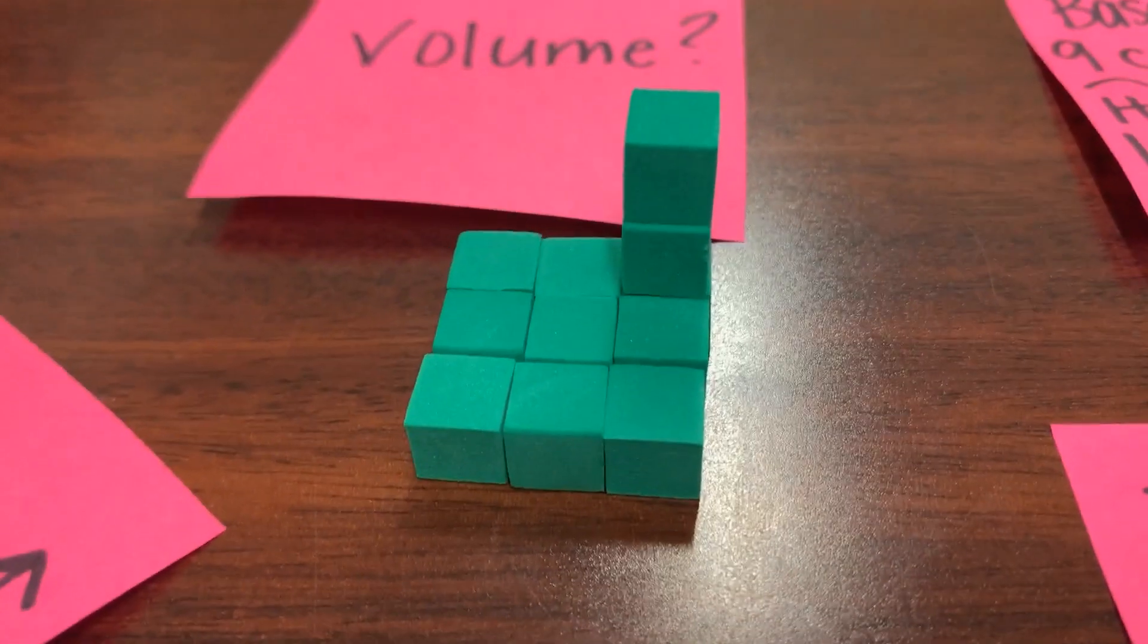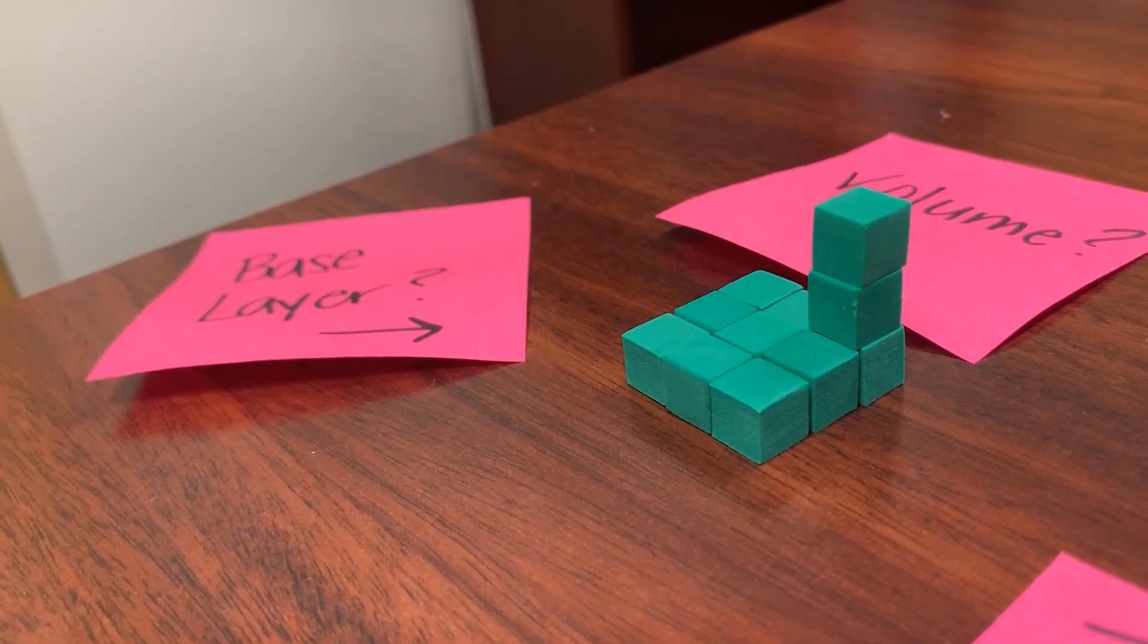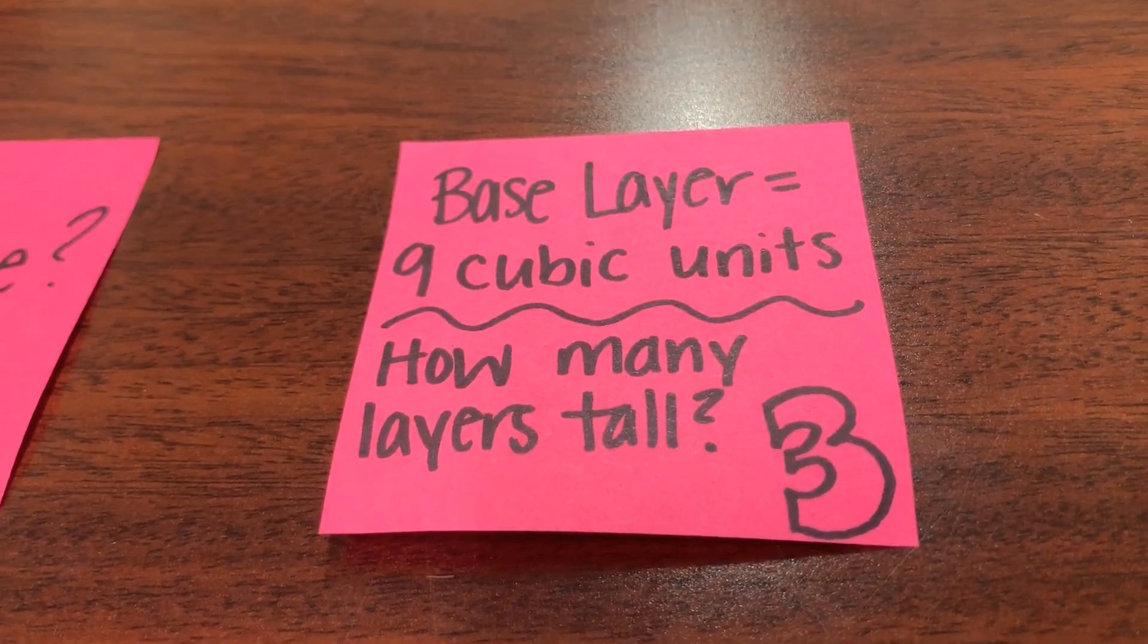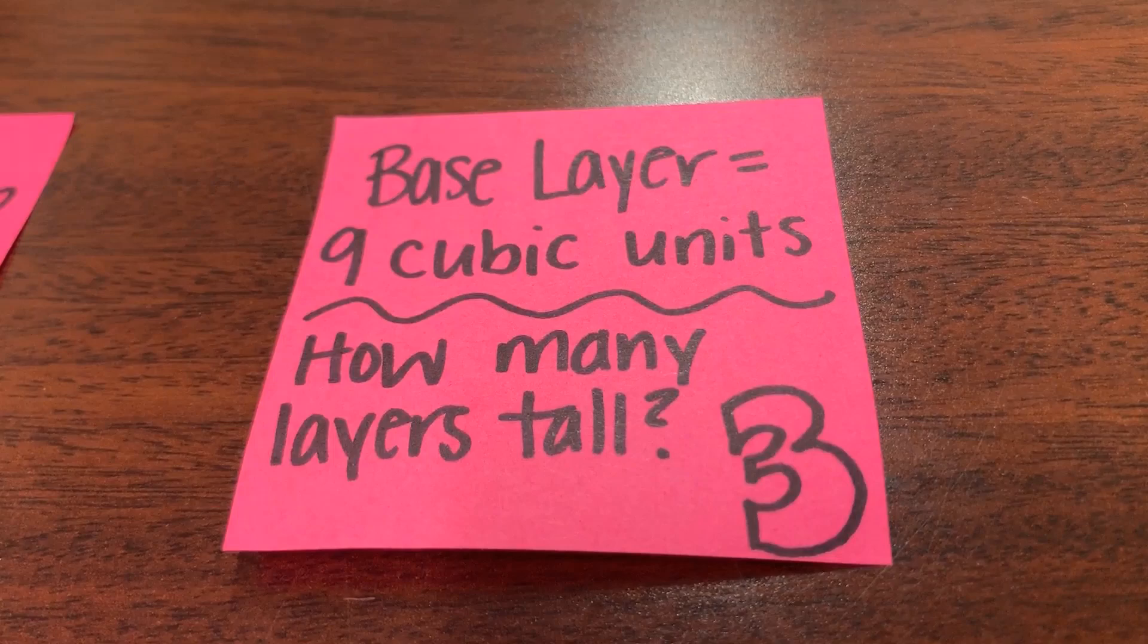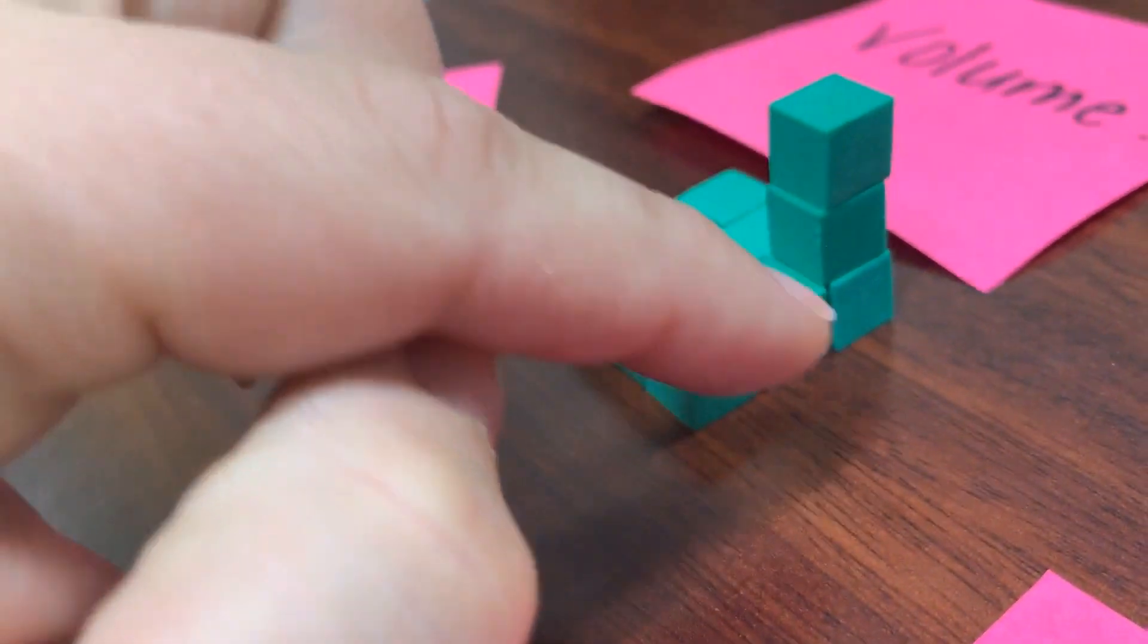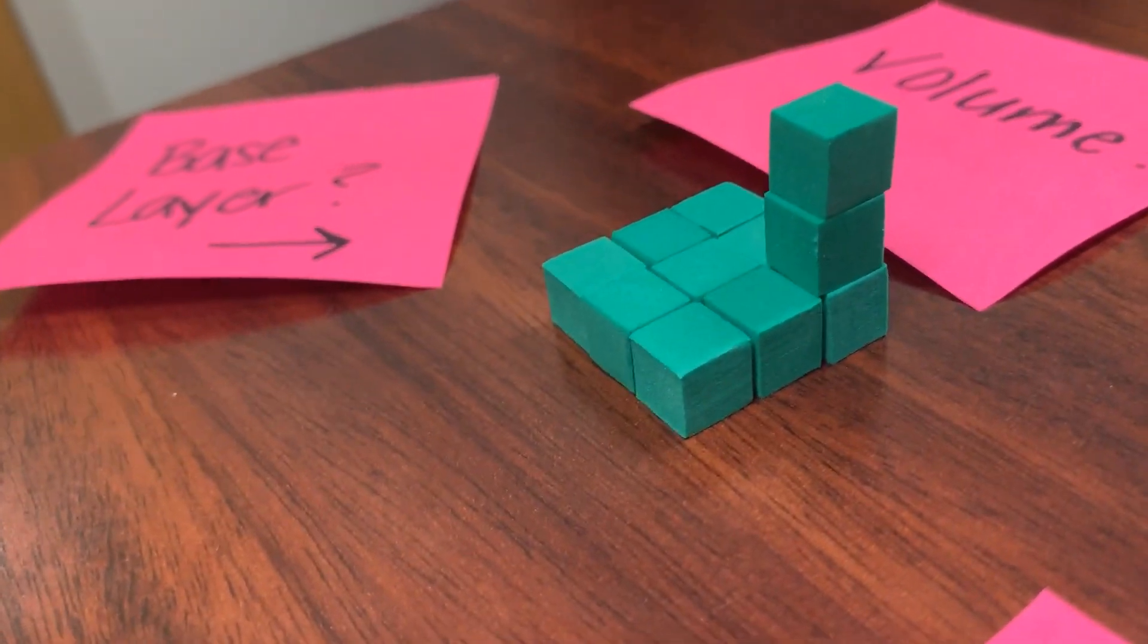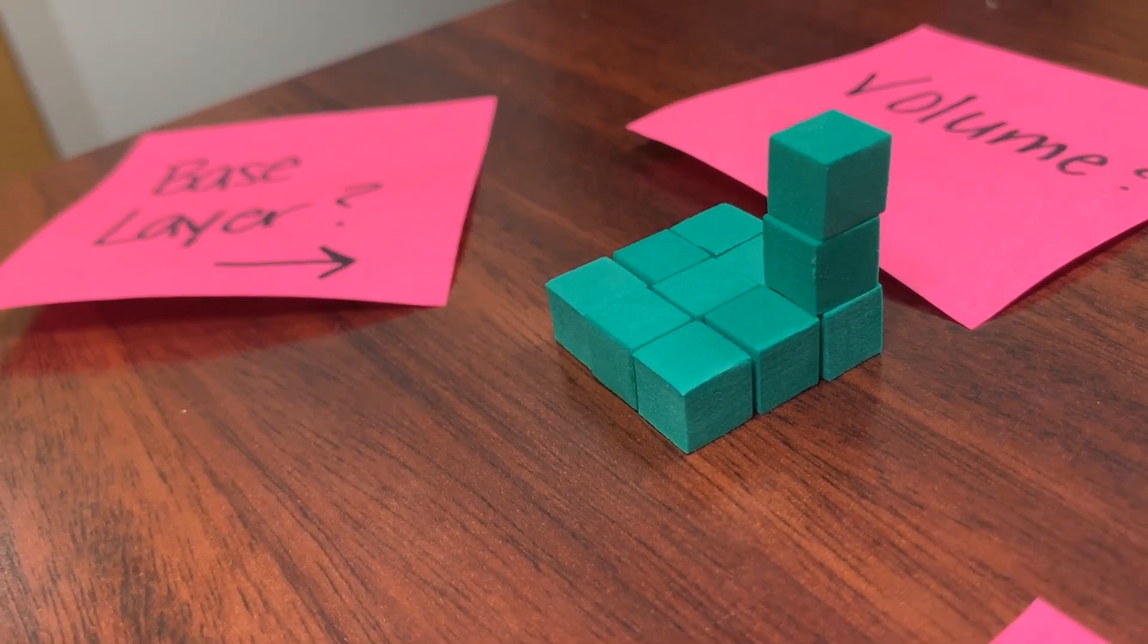Based on the way it's built right here, can you tell me how many layers tall it's going to need to be? If you said three, you are correct. The base layer was nine cubic units and how many layers tall? It is going to be three layers tall. I know that because here on the side I have one, two, three. Remember that base layer always is counted in as the first layer of your rectangular prism. So it looks like it's going to be three layers tall.